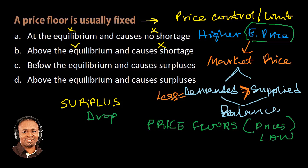Option C: below the equilibrium — that is not correct — and causes surplus — this is correct, but this is not completely correct.